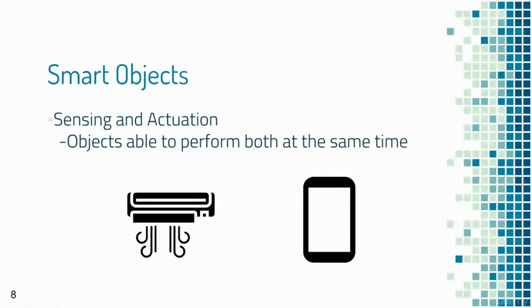Some smart objects are equipped with both sensing and actuating modules and can perform both functions. A simple example is your mobile device, which can detect your motion through an accelerometer sensor and alert you when, for example, you are sitting for too long. That too is an example of an Internet of Things application.